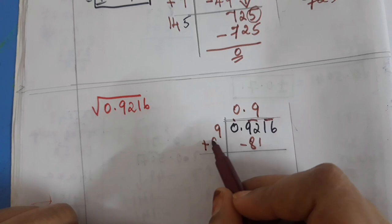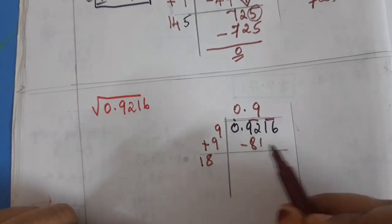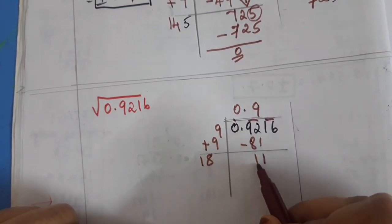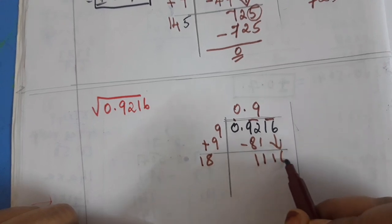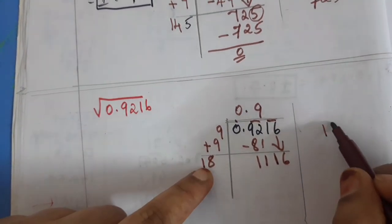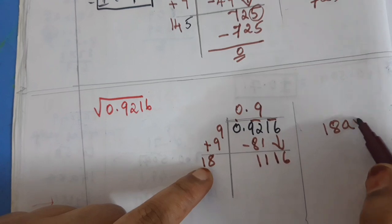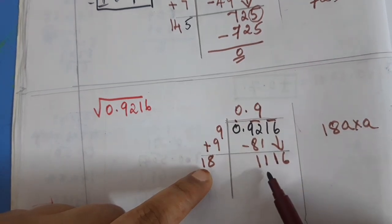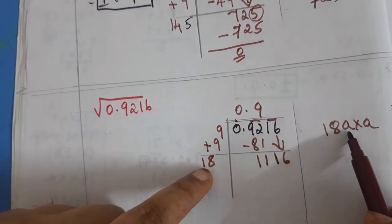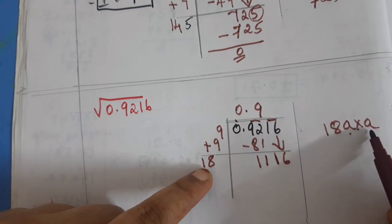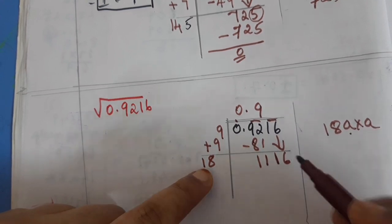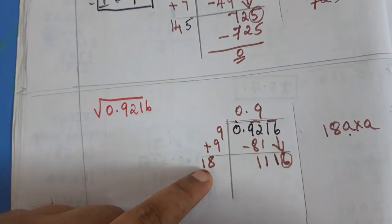9 plus 9 is 18. Subtraction: 92 minus 81 — borrow, result is 11, and bring down 16 to get 1116. Now with 18, any guessing number multiplied with that same guessing number — we have to get 1116.